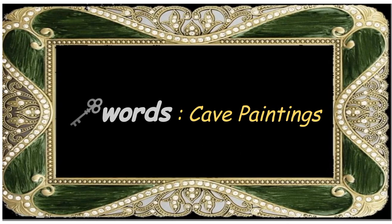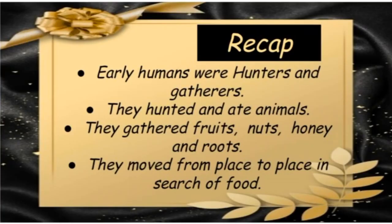Before starting our today's plan, first we will revise lesson plan one — what we learned. We learned early humans were hunters and gatherers. Hunters are those who hunt animals. Gatherers means who collect things. They hunted and ate animals, and they gathered or collected fruits, nuts, honey, berries, roots, fish from rivers, and other edible materials.